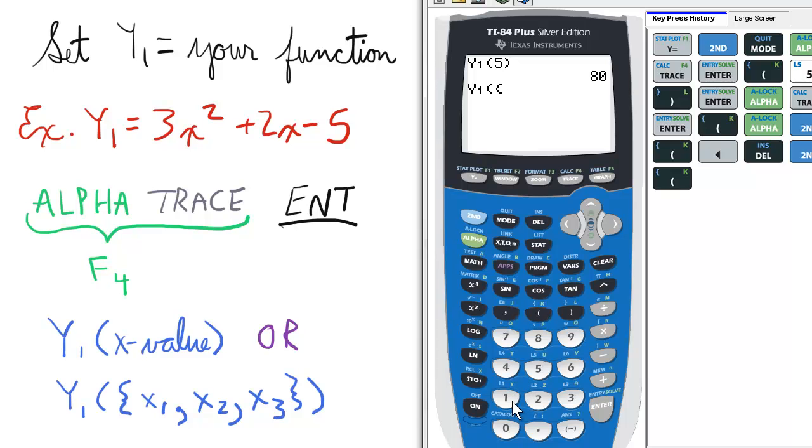In this case let's find the value for 1, comma, 0, comma, and negative 3. Then close braces, close parentheses, enter.